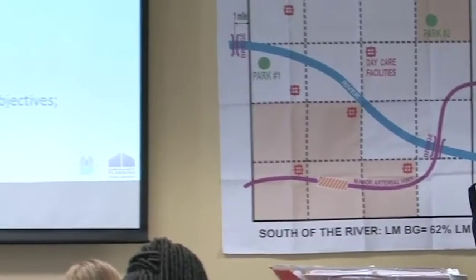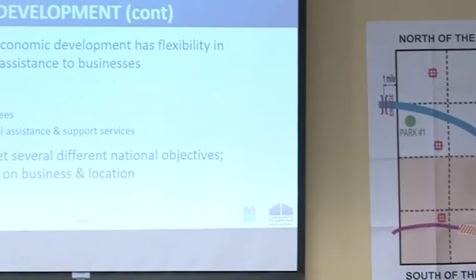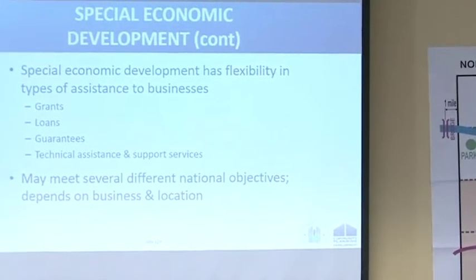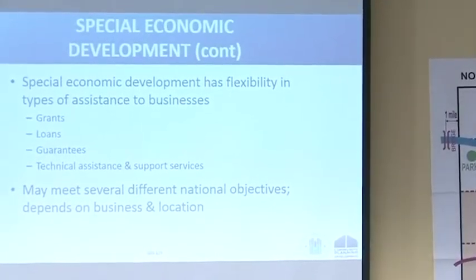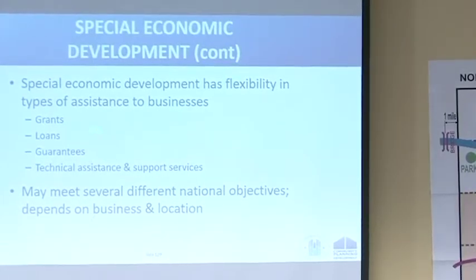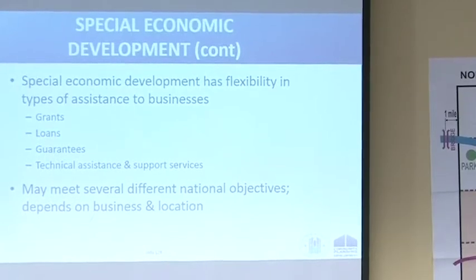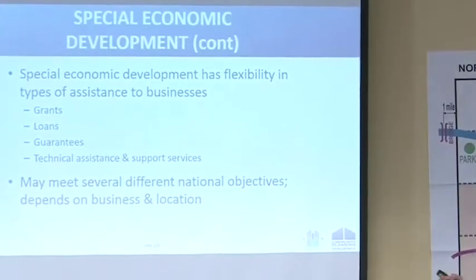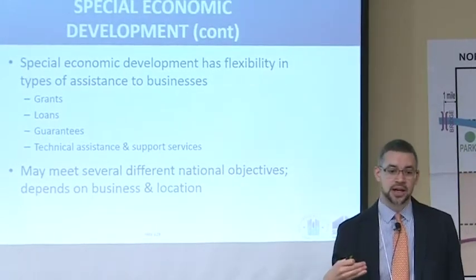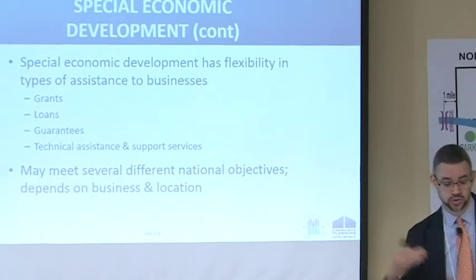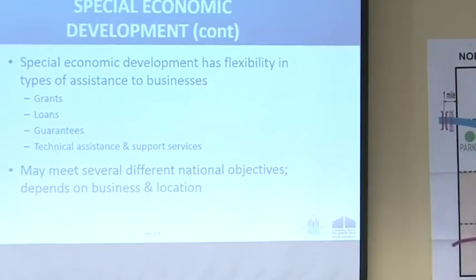Special economic development activity has flexibility in the types of assistance you provide to those businesses — you design how you want to provide that assistance. You can do a grant, a loan, a guarantee, or you may just provide expertise. For instance, a microenterprise or small business trying to start up that doesn't have an accounting system — you can provide technical assistance to set up their accounting system and other support services.